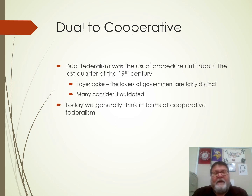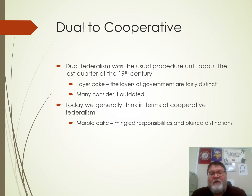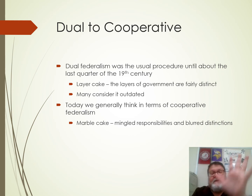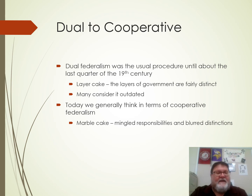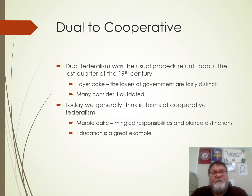Cooperative federalism is what we have starting towards the end of the 19th century and throughout the 20th century and onward. That is the idea of marble cake — mingled responsibilities, blurred distinctions. A chocolate and vanilla marble cake has vanilla and chocolate all over the place in different areas. So that's a great analogy to use.